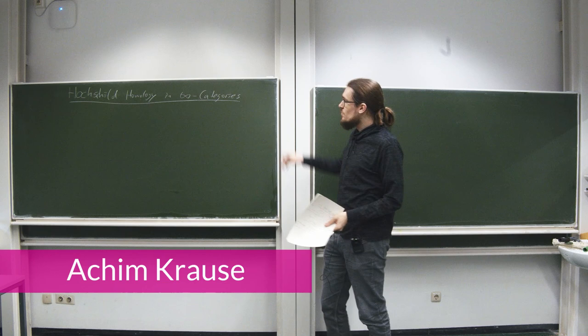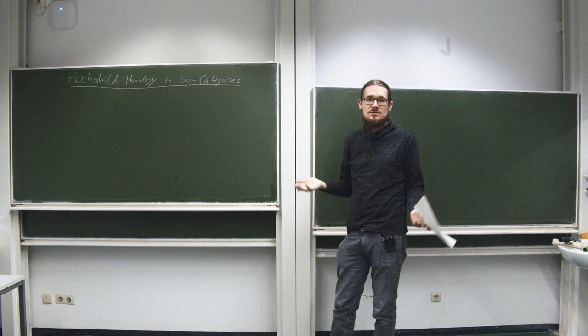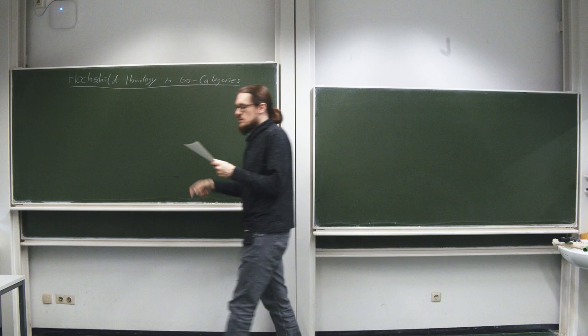I'm Achim Krause from Mathematics Münster. To define Hochschild homology in an arbitrary symmetric monoidal infinity category we will first need to define a suitable notion of algebra to take Hochschild homology of.